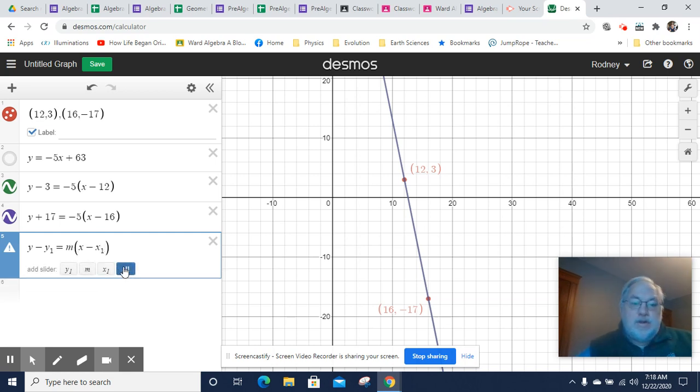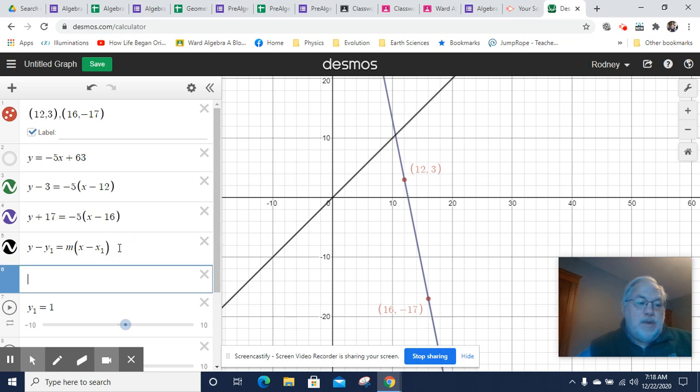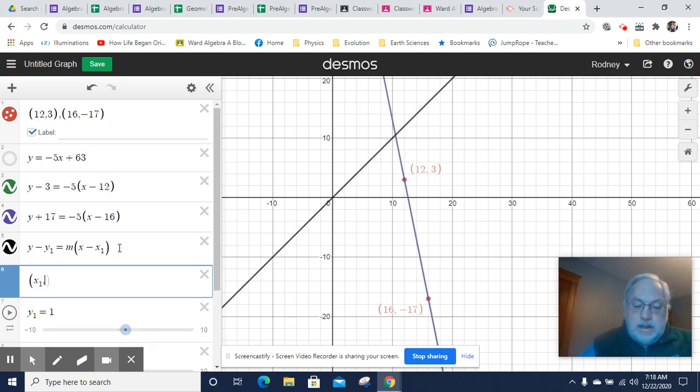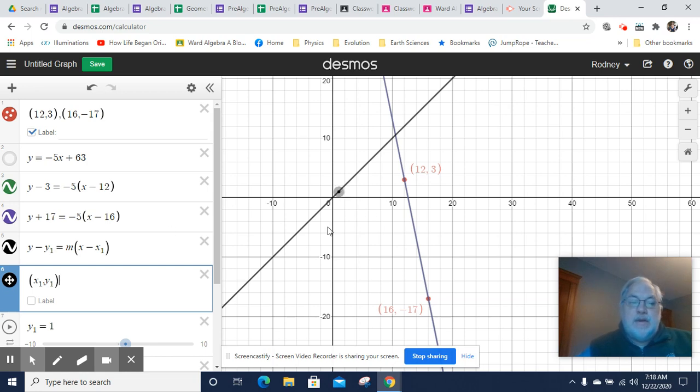And, in fact, if I were to create a slope, we'll say m. I'm going to actually make it this way. Y minus y1 equals m times x minus x1. And I'm going to make sliders for all of those. And I'm going to create a point that is going to be x1 comma y1. There's a point. There it is right there.